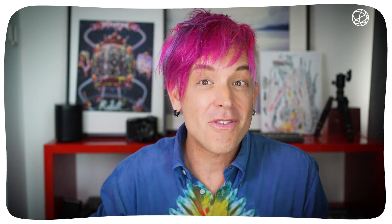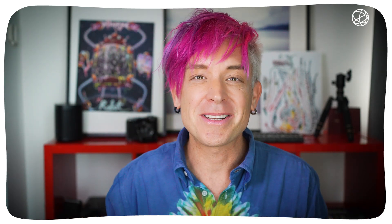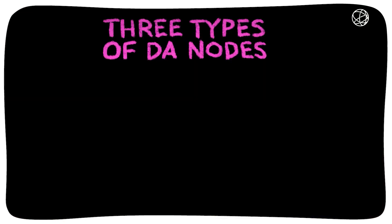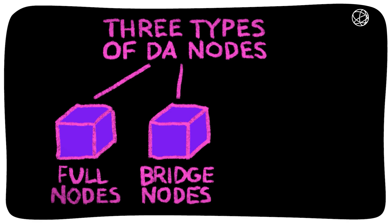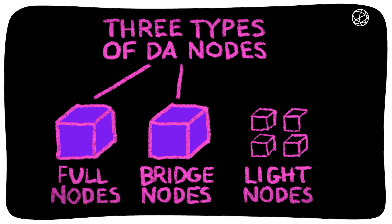Just as QR codes use erasure coding to remain functional despite damage, Celestia uses the same technology to build a highly decentralized network of nodes. In Celestia, there are three types of data availability nodes. First, full nodes — they store the entire chain, but running one requires significant hardware resources, which can limit decentralization. Then bridge nodes, which serve as intermediaries between the consensus network and the data availability network — they download and validate block headers and ensure data availability by erasure coding the blocks. And finally, light nodes, which verify data availability without downloading the entire chain — they only download block headers and use data availability sampling to ensure the underlying block data is available.